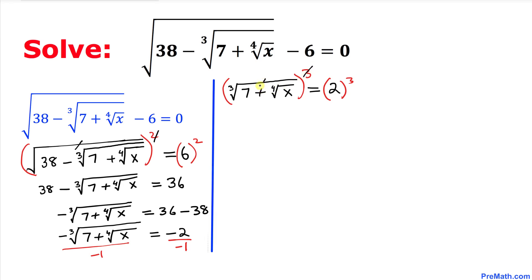As you can see, this cube and cube root they are gone. So we ended up with 7 plus the fourth root of x, and we know 2 to the power 3 is 8. Let's move this 7 on the right hand side.